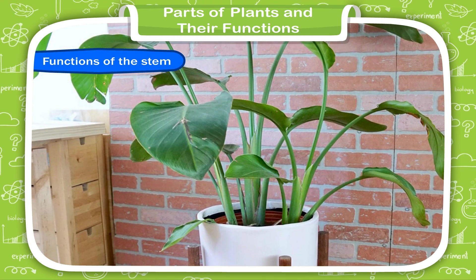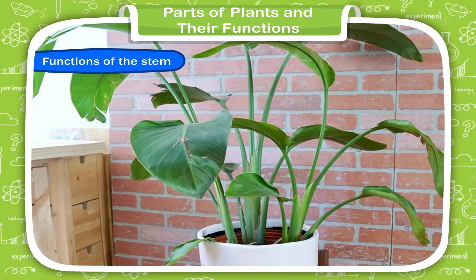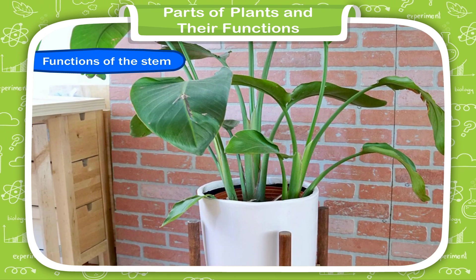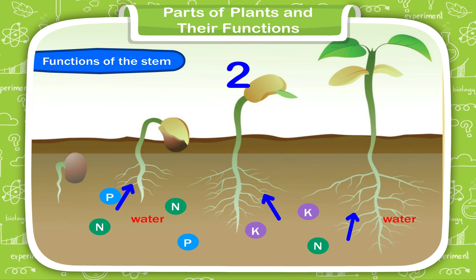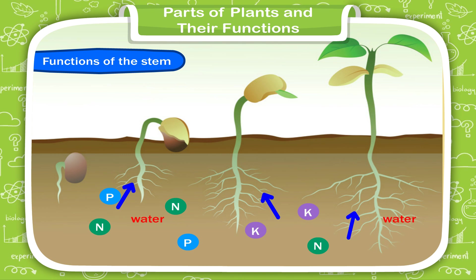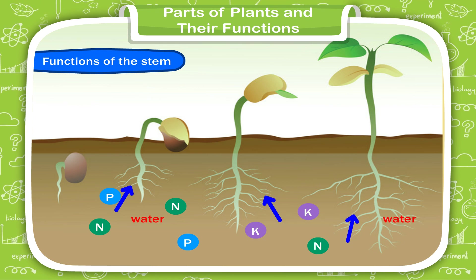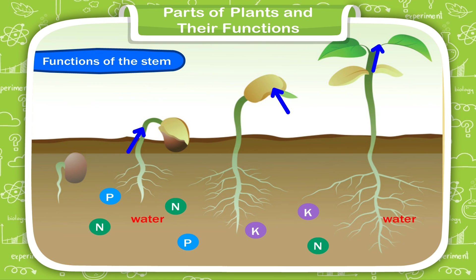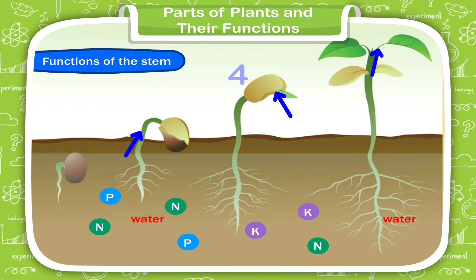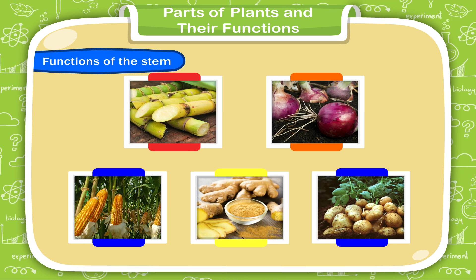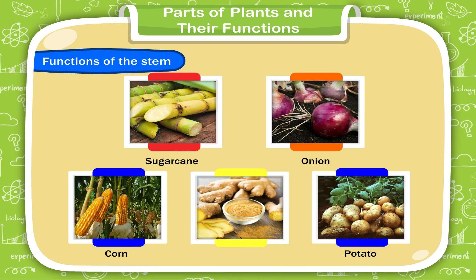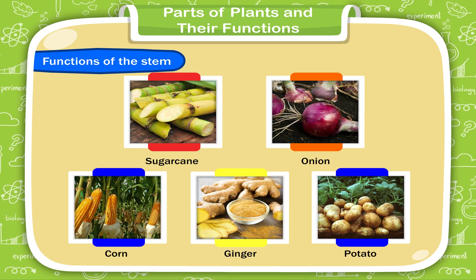Functions of the Stem. The main functions of the stem are: first, the stem helps the plant stand upright. Second, it carries water and mineral salts from the roots and sends them to the leaves. Third, it carries food prepared by the leaves to different parts of the plant. Fourth, the stems of some plants like sugarcane, onion, corn, potato, and ginger store food in them.